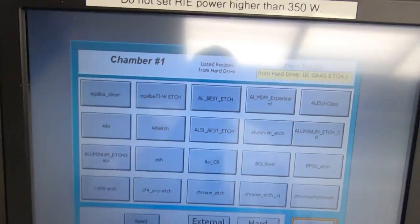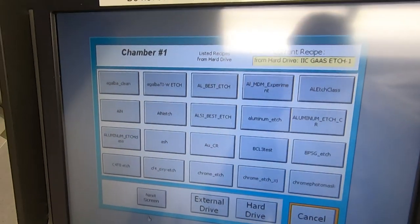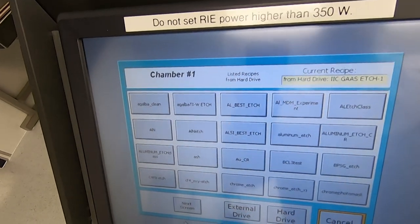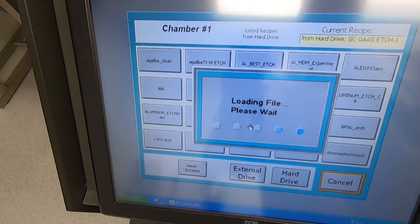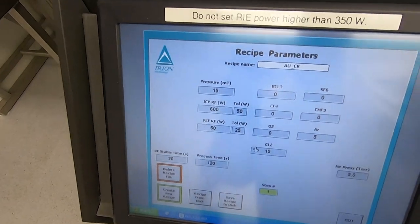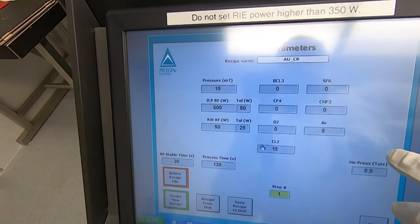So here's a bunch of our recipes, different things that we've etched over the years. I do wish, so let's say here's gold chrome etch. I just wish that they had somewhere in here to add some comments about the recipe.